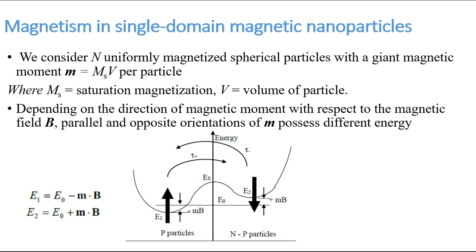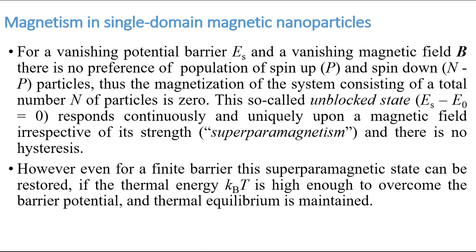The applied field is in the direction of the energy axis. We have two types of populations in the sample: one along the applied field and the other opposite to the applied field. We have two kinds of energy levels, e1 and e2. The relaxation time for particles going from e1 to e2 is tau-plus, and from e2 to e1 is tau-minus.